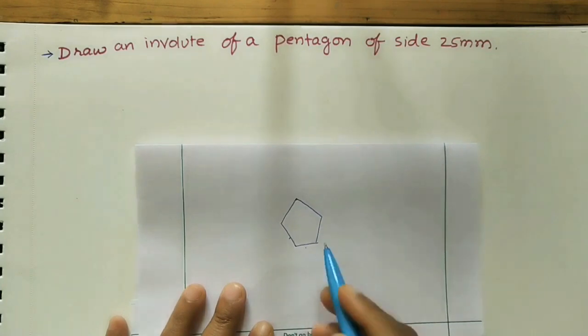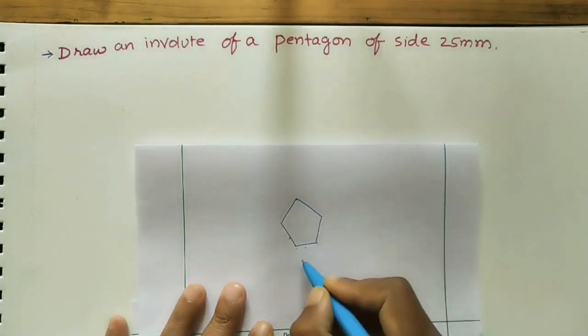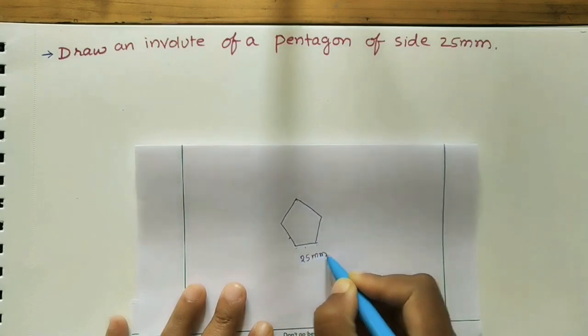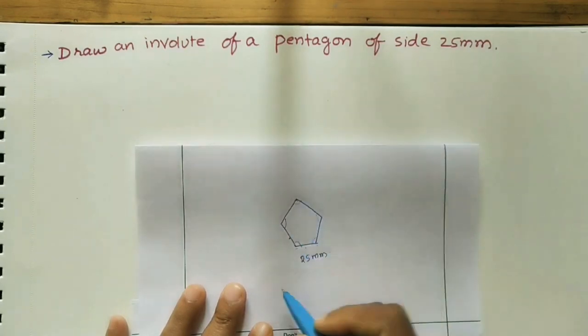Pentagon means it has 5 sides. We are using regular pentagon here. All sides have equal length of 25mm, and the angle at all corners is also same for the regular pentagon.